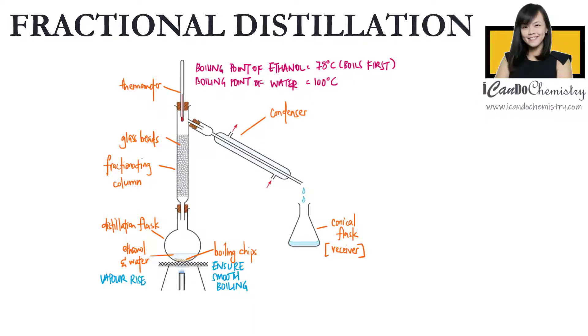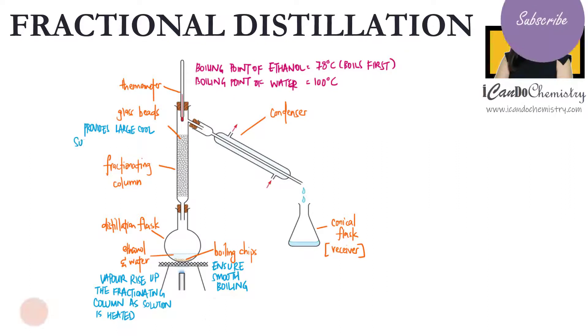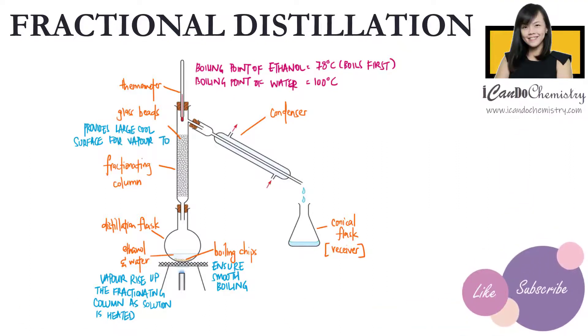As the vapour of both liquids rise to the fractionating column, they touch the glass bits in the column. There are many glass bits, and they serve to provide large, cool surface area for the vapour to condense on.